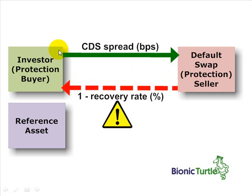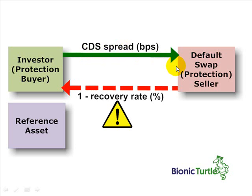Part of that agreement is really like an insurance agreement. The investor is paying, typically on a quarterly basis, premiums to the default swap seller. That premium is called the CDS spread. It's typically basis points multiplied by the nominal, so there's a guaranteed premium payment on a regular basis for the tenor or duration of the contract from the investor to the swap seller.